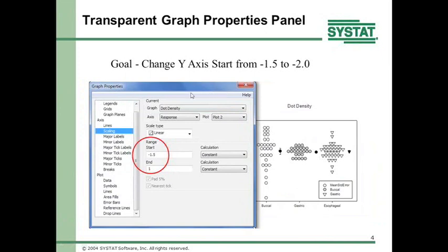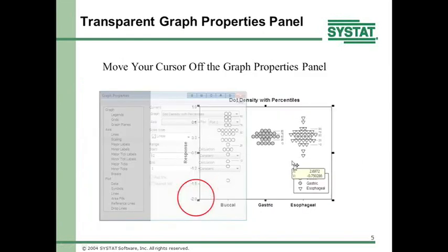One of the features of this new graph properties is that the panel can become transparent. For example, if your goal is to change the y-axis start value from minus 1.5 to minus 2, but the graph properties panel covers the graph so you can't see the y-axis — you enter minus 2 and then move your cursor off the panel. The cursor becomes transparent and you can see the graph has changed to minus 2. You can then continue changing properties without leaving graph properties.